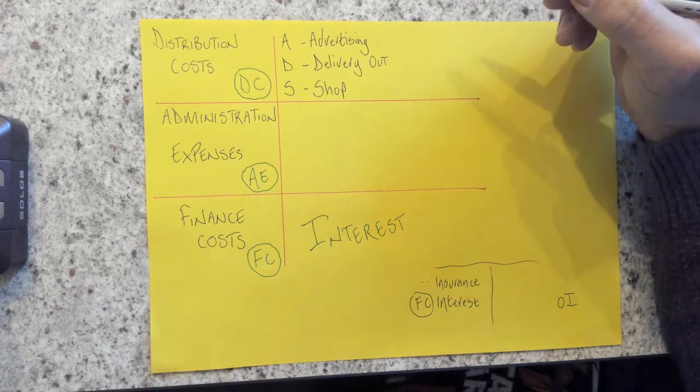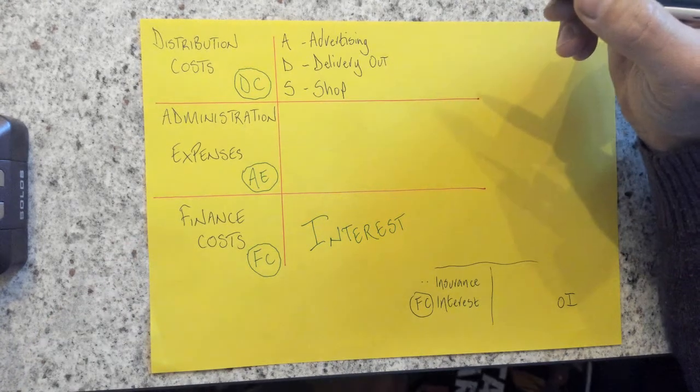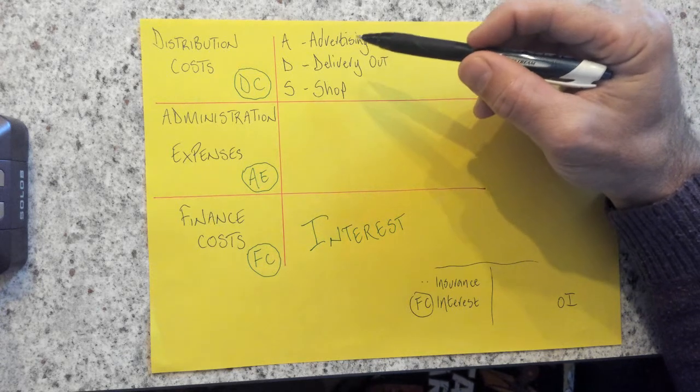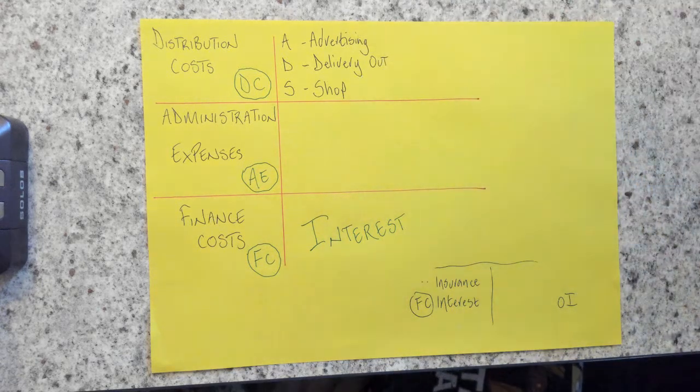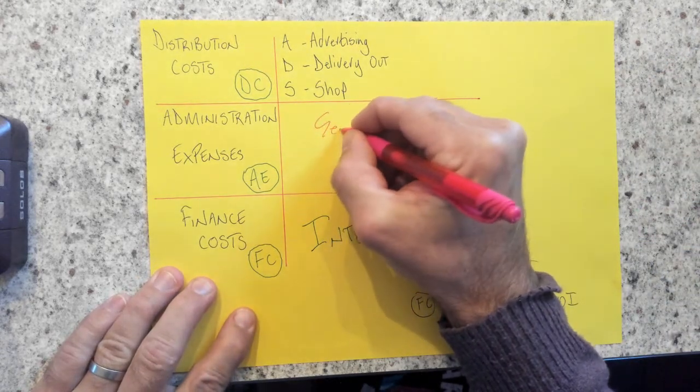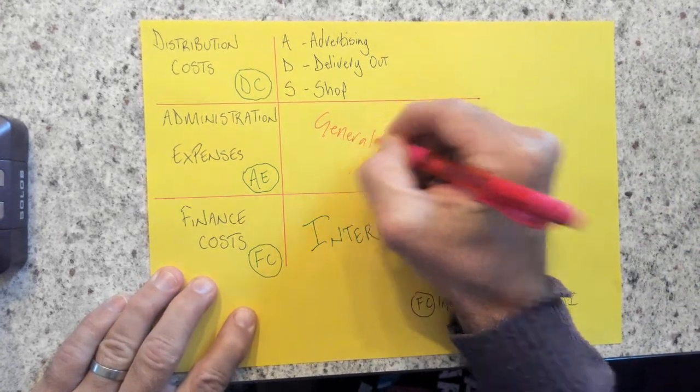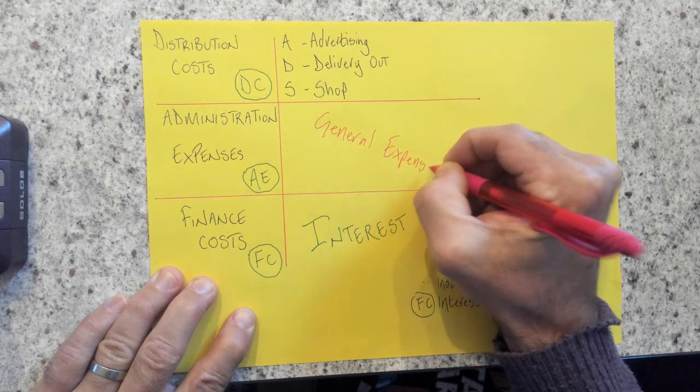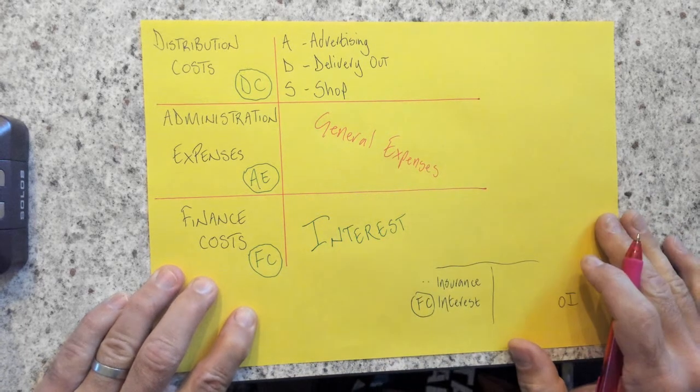So for example, if I had shop electricity or shop rates, then that would come under a distribution cost. And then finally, everything else is what would be classified as a general expense. So in other words, it's not directly related to the main form of income coming into the business.